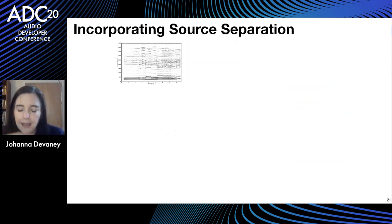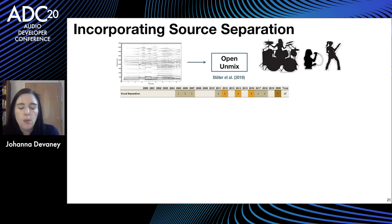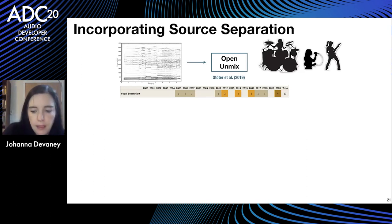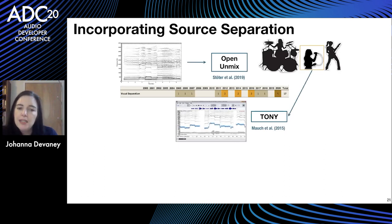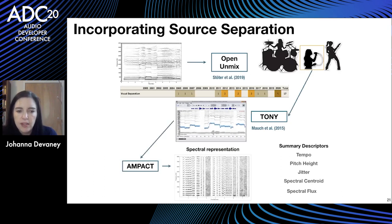The most recent development is that I've been incorporating source separation to get away from the score, using Open-Unmix. I take the vocals from Open-Unmix — because I'm always interested in the vocals — and put them into a freeware called Tony, which does a good job of segmenting the stream into notes and providing an F0 trace. Then it goes into AMPACT to create spectral representations. I've been doing work looking at tempo, pitch height, jitter, spectral centroid, and spectral flux.